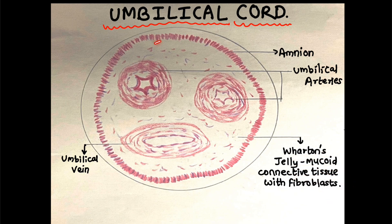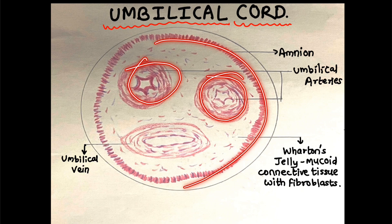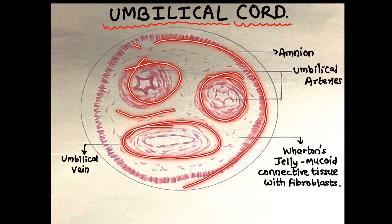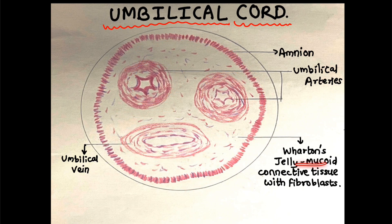It's very easy. To recap: Amnion, two Umbilical arteries, one Umbilical vein, and then Wharton's Jelly — mucoid connective tissue with fibroblasts. That's it, friends. It was a very easy topic — the Umbilical Cord.